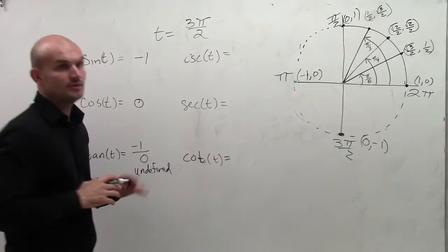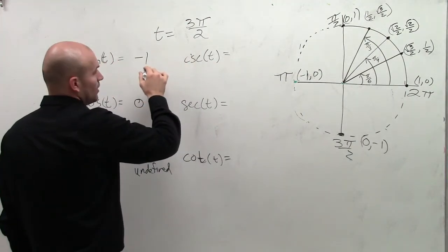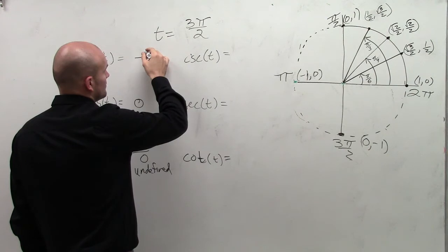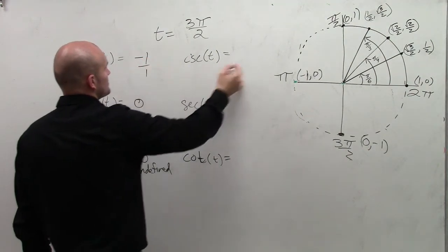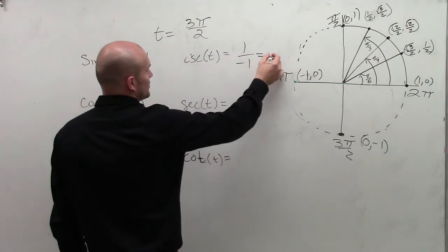Cosecant is the reciprocal, so you'd have 1 over -1, which equals -1.